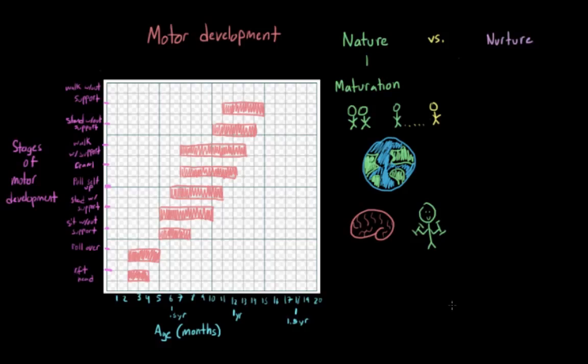But the environment can still play an important role in the development of motor skills. How much space and time a child has to practice these skills can have an effect on development. Culture can also have an influence on development.